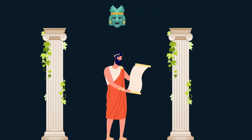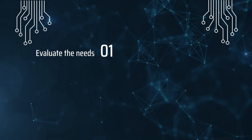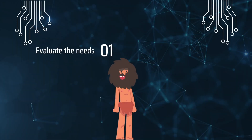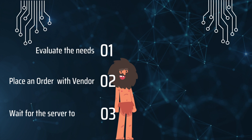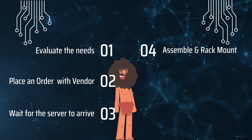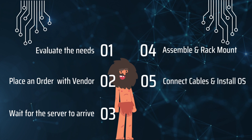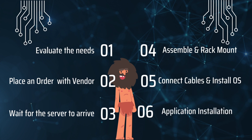An overview of the process looked something like this. First of all, the company had to evaluate their needs — what exactly they were looking for in a server. Then they had to place an order with the vendor. The vendor processed the order and shipped the items to the company, either as a single shipment or in multiple shipments. Once the company had their hardware, they had to rack it, ensure proper connectivity was in place, install the operating system, and finally install the desired application.